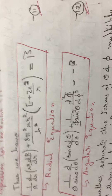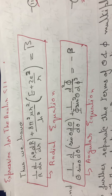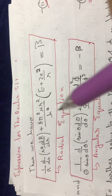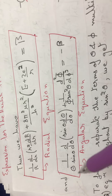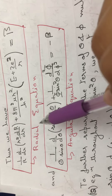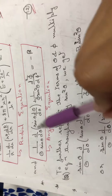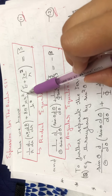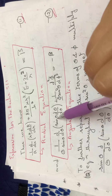Setting the radial part and angular part separately equal to the same constant β, we get two equations: the radial equation is set equal to β, and the angular equation is set equal to −β. Here the radial equation has only the variable r, while the angular equation still has two variables: θ and φ.